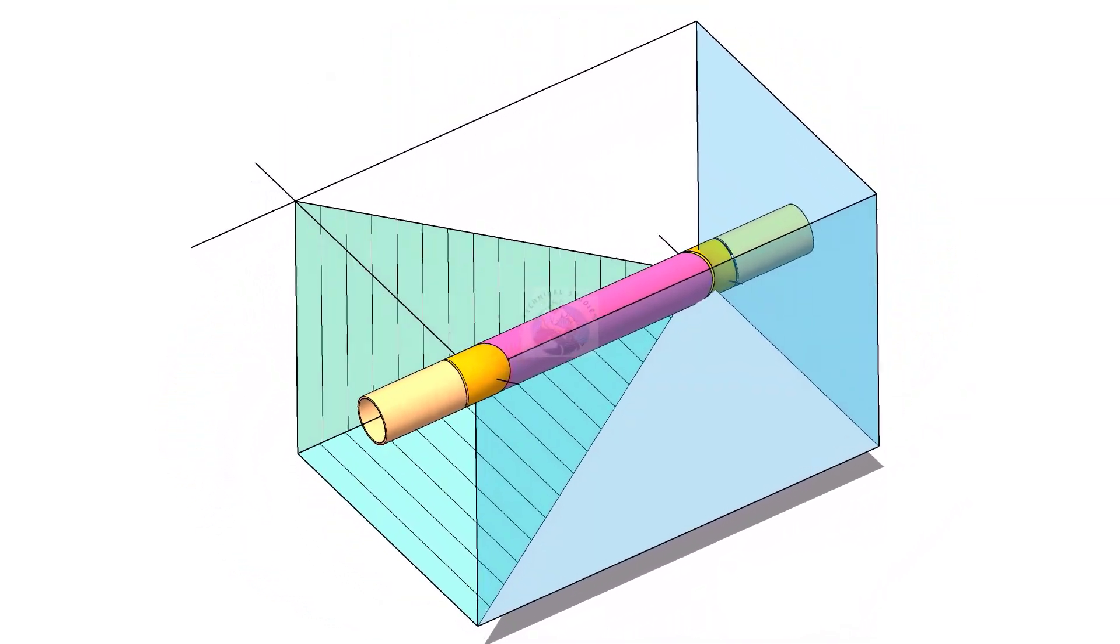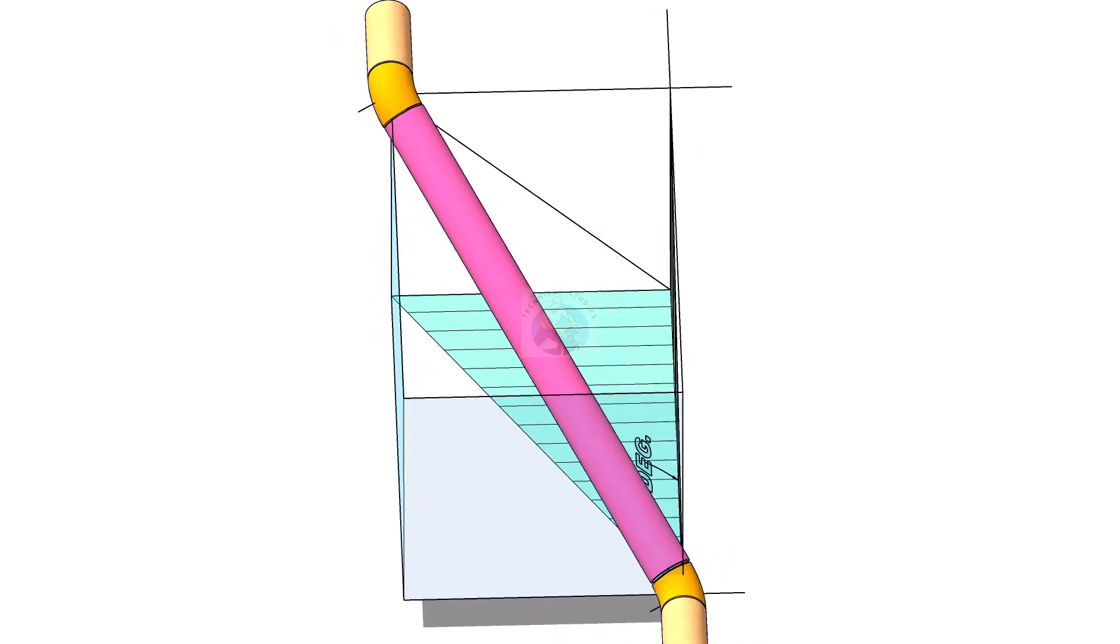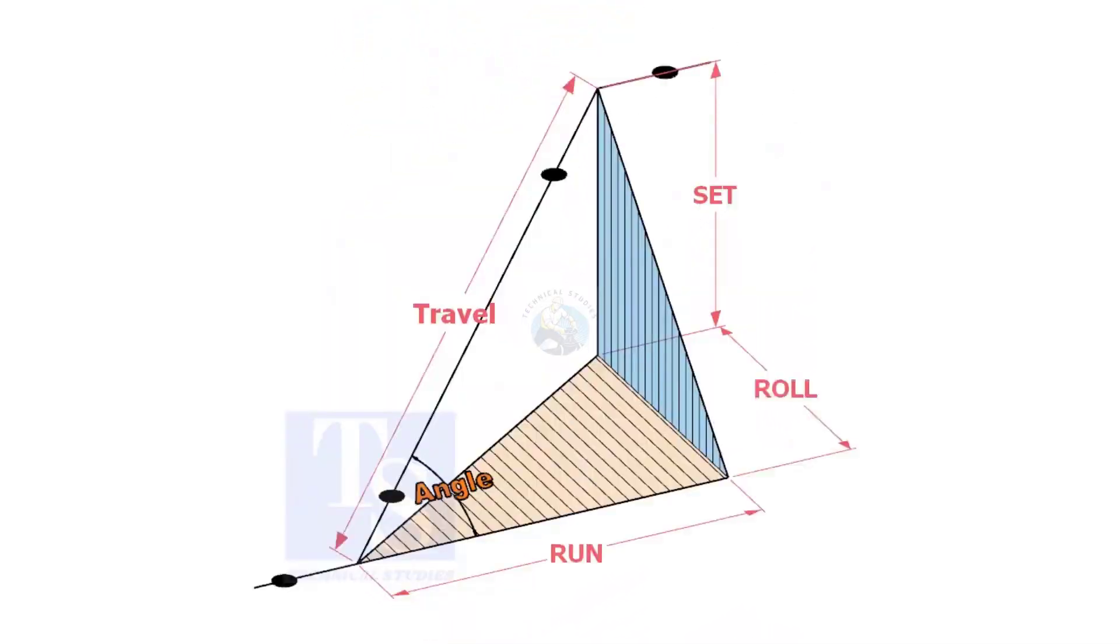Welcome to technical studies. In a piping drawing of a double rolled offset, usually the dimensions of the run, set, and roll are given.